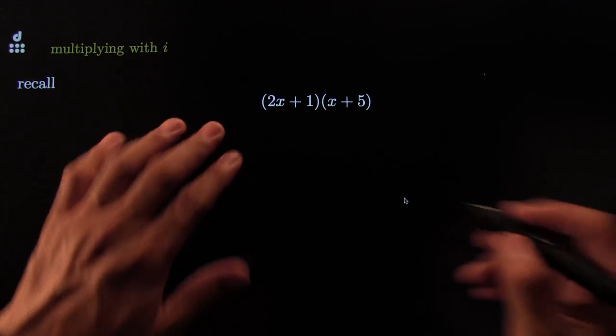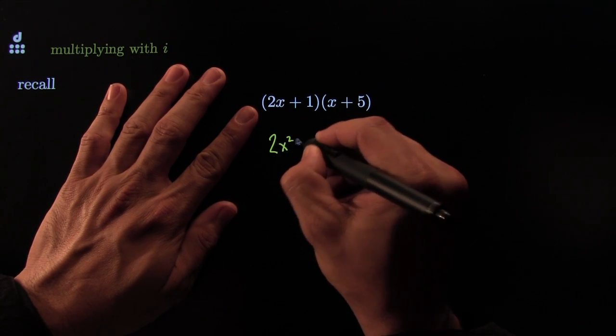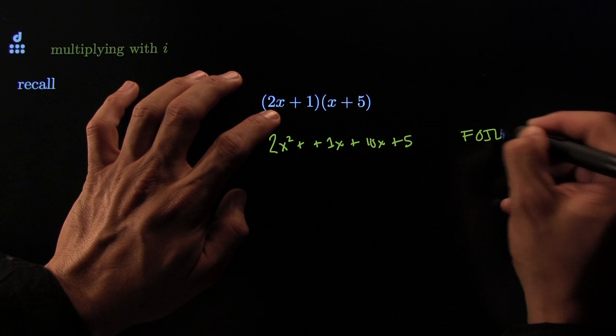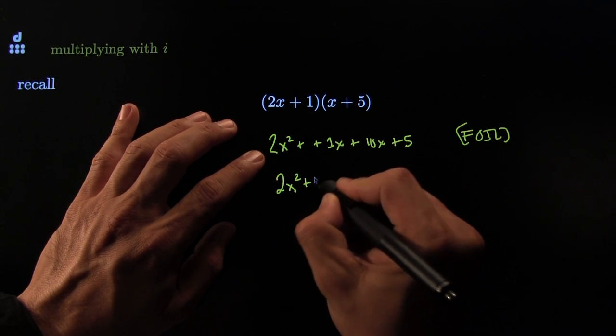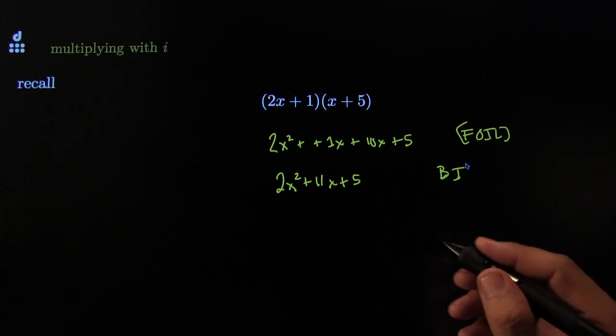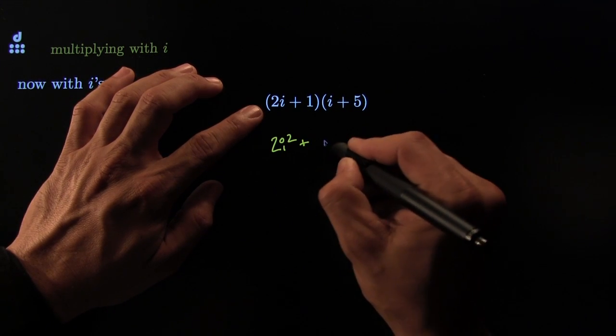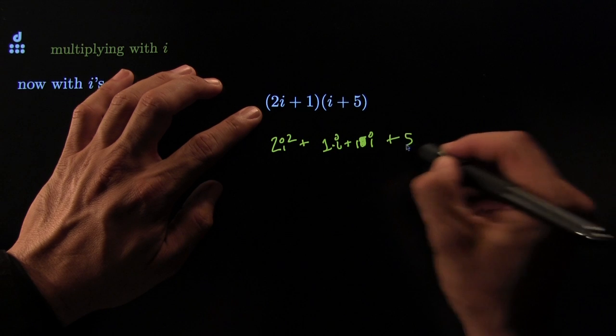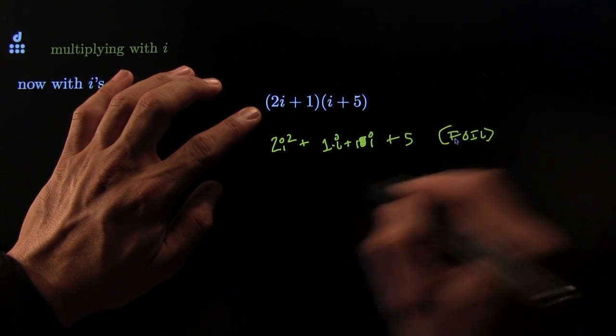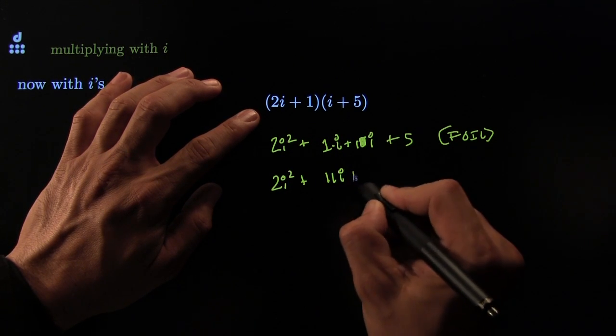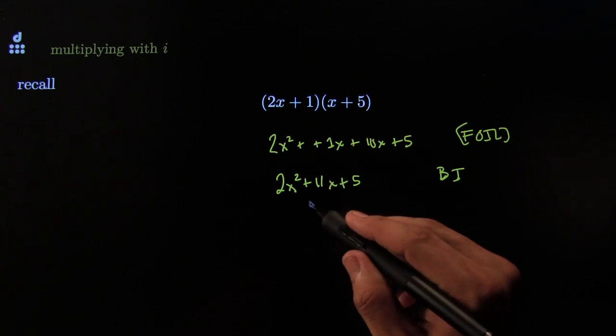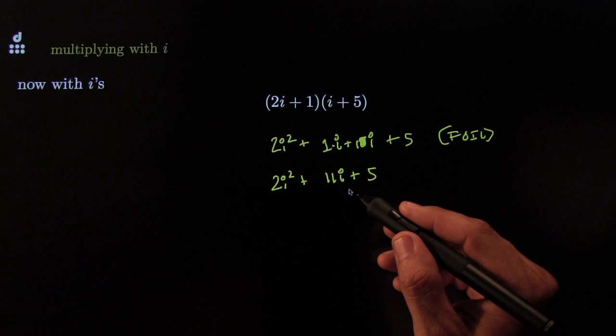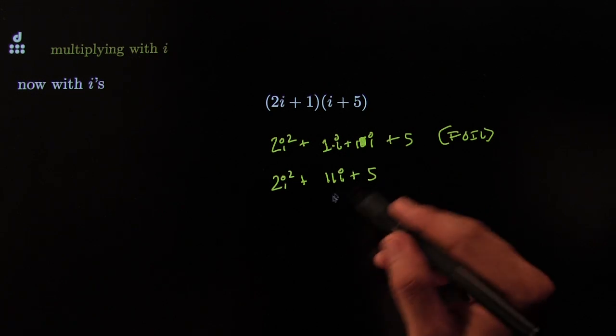Multiplying I's, no problem. We will do the same thing. Recall how we multiply regular polynomials. We would use the foil, and this would be 2x squared for the first. This would be 1x for the inner, 10x for the outer, and 5 for the last. And that would give you 2x squared plus 11x plus 5 by inspection. Exactly, exactly the same ideas work for I. So this would be 2i squared plus 1i plus 10i plus 5. This is by foil again. And so that would give you a grand total of 2i squared plus 11i plus 5. Same as this one, except this one's got x's. 2x squared plus 11x plus 5. This one's got i's. Other than that, I don't see a difference.